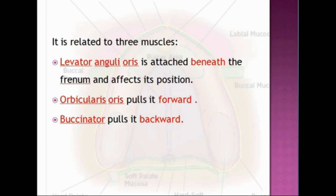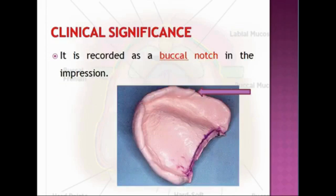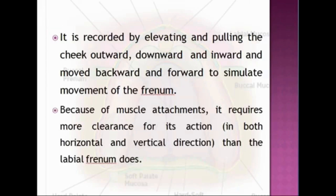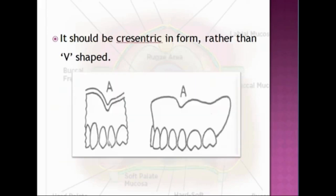Levator anguli oris is attached beneath the frenum and affects its position; orbicularis oris pulls it forward and buccinator pulls it backward. It is recorded as a buccal notch in the impression, recorded by elevating and pulling the cheek outward, downward, inward, backward and forward to simulate the movements of the frenum. It requires more clearance for its action than the labial frenum and is crescentic in form.